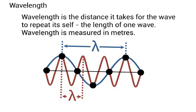Wavelength is the distance it takes for the wave to repeat itself. Basically the length of one wave. Wavelength is measured in metres. And here in our diagram you can see two waves. We've got this blue wave here. Its wavelength, you can see from one peak to another, that distance there is one wavelength.